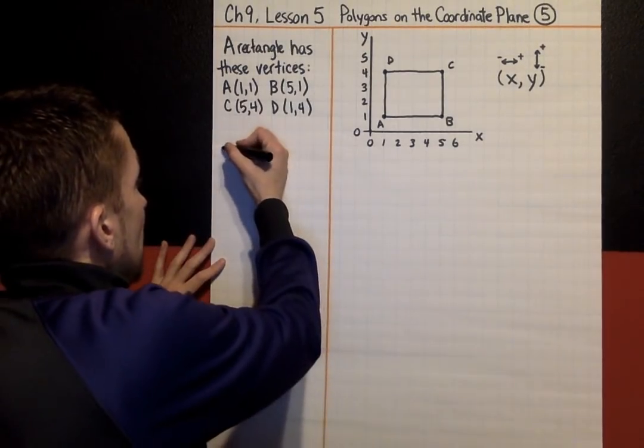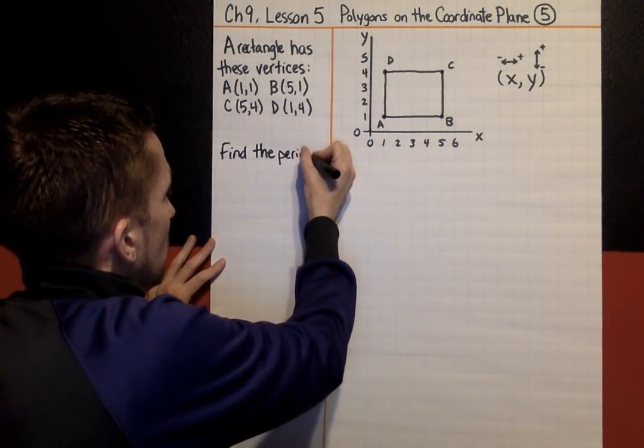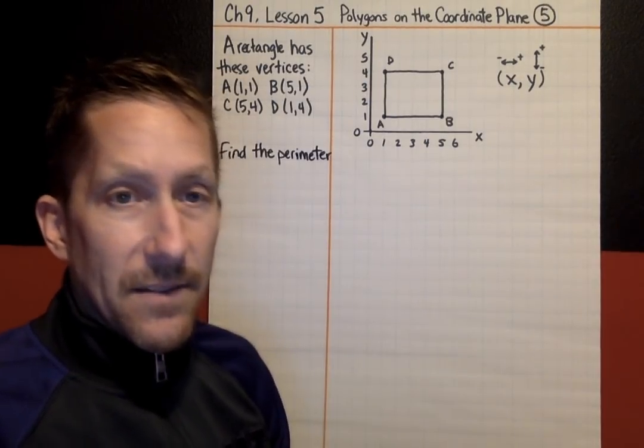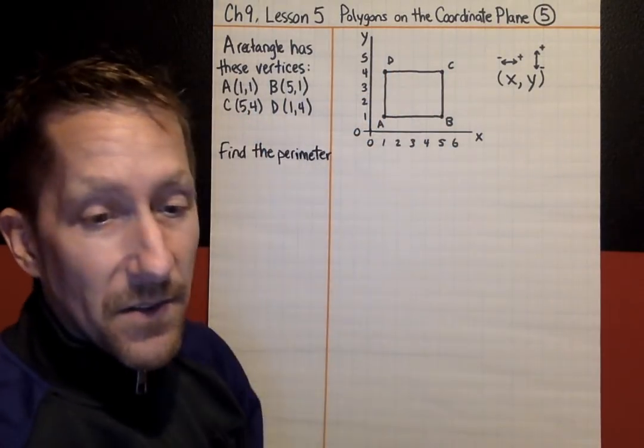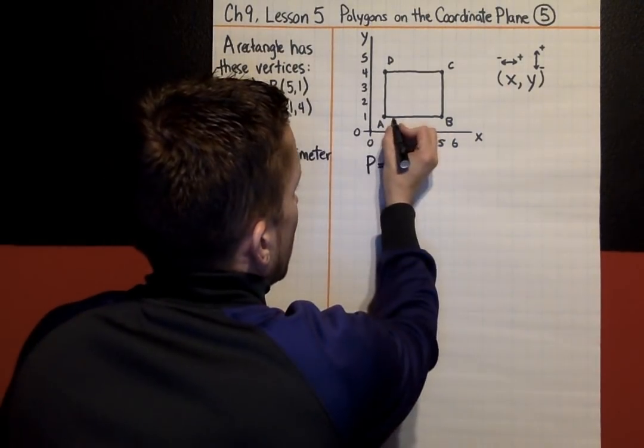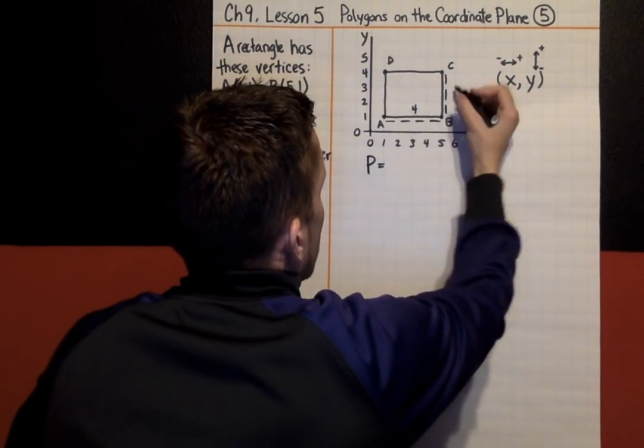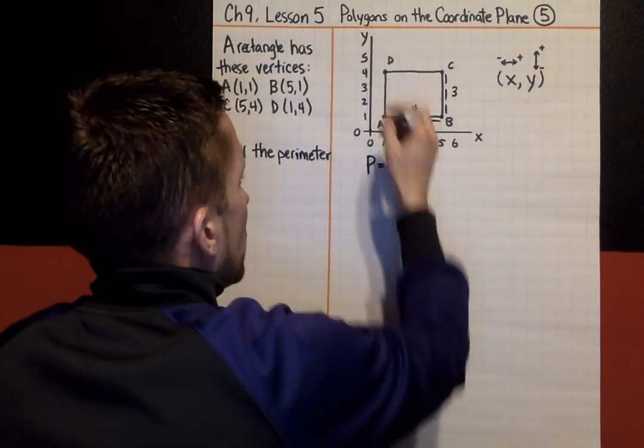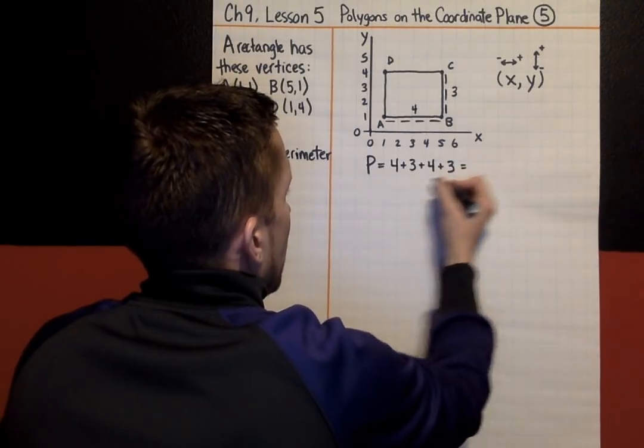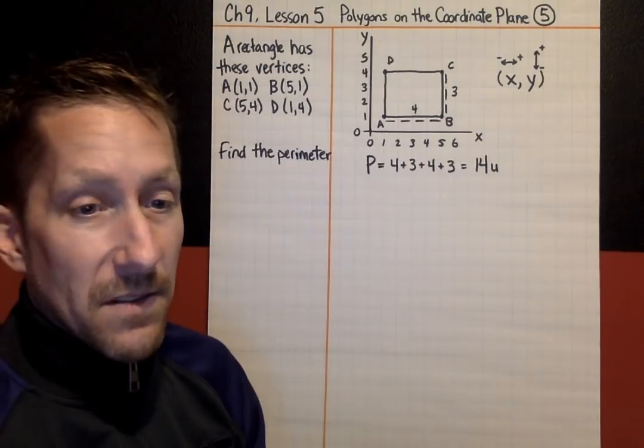So A, B, C, D, we plotted those vertices, connect the points, and we do have a rectangle. So, let's say we were asked to find the perimeter of that rectangle. The perimeter is the distance around the outside, so we're building a fence around this figure. The perimeter would be, this is 1, 2, 3, 4 units of fence that way, and 1, 2, 3 units of fence on that side, 4 more here, 3 more here. 4 plus 3 plus 4 plus 3. I would have 7 and 7, 14 units of fence, or the perimeter would be 14 units.